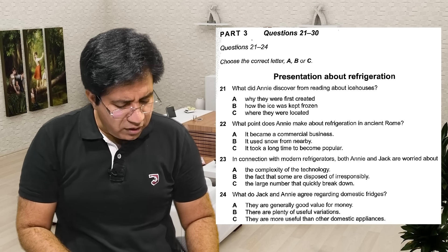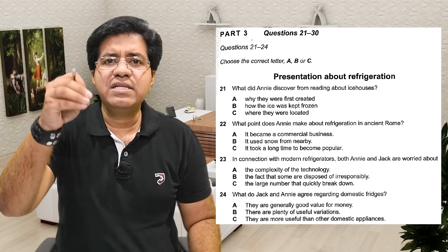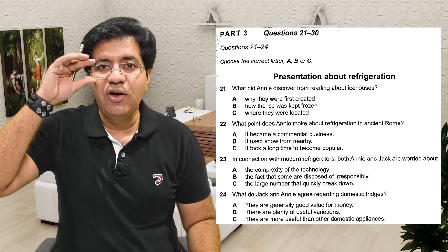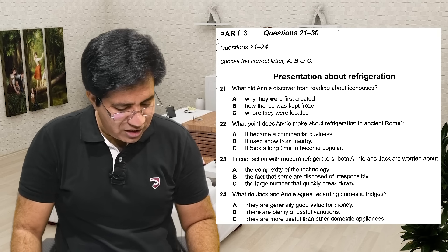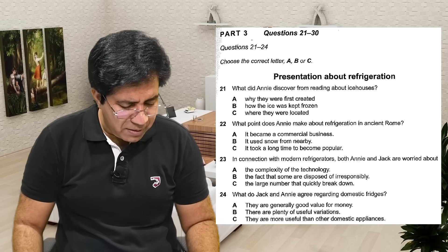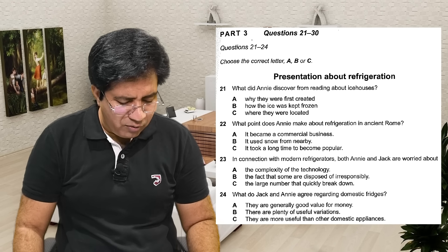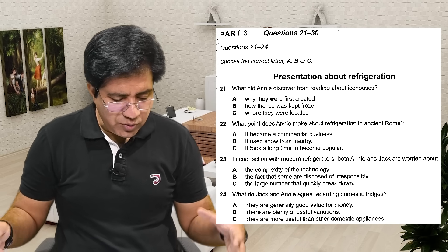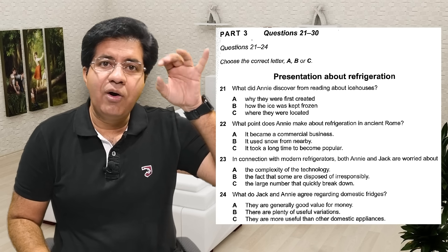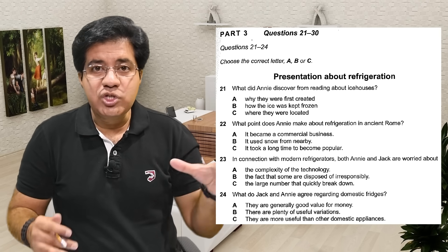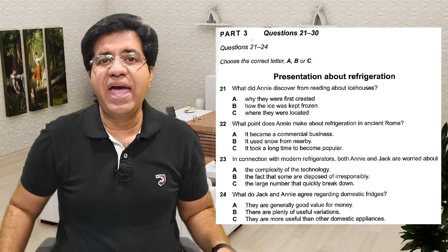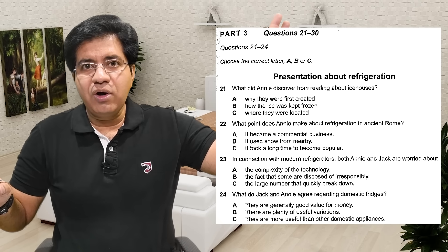Option B: 'The fact that some are disposed of irresponsibly' — note 'disposed of irresponsibly.' Option C: 'Large number that quickly break down' — 'large number break down.' When listening, see which option they start discussing first — A, B, or C — and catch that option right away. Sometimes the answer is in the last option discussed; sometimes it's the first. Be careful — the initial and final parts of the audio are both extremely important.